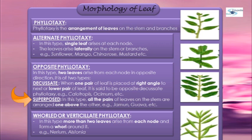Now comes superposed opposite phyllotaxy. In this type, one node bears two leaves, and all pairs of leaves on the stem are arranged one above the other. So opposite phyllotaxy has two subtypes: decussate, seen in Calotropis and Ocimum (tulsi), and superposed, seen in jamun and guava.